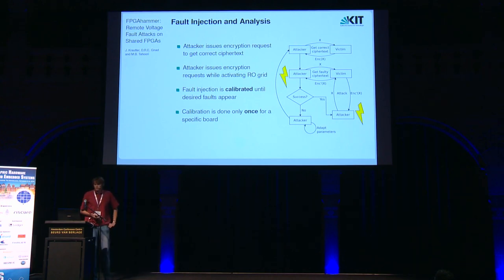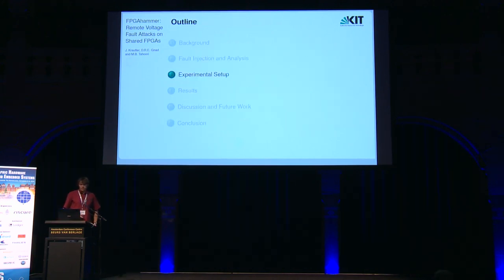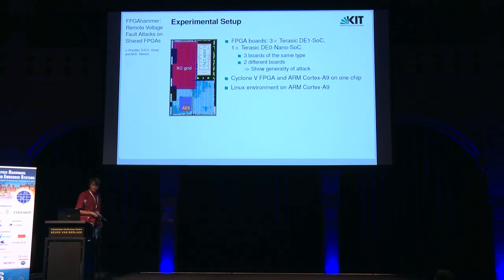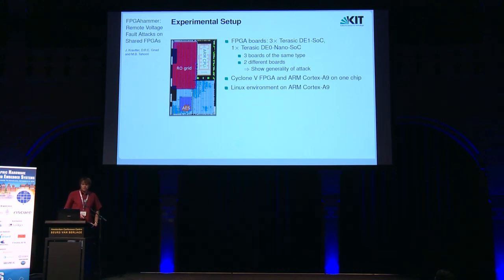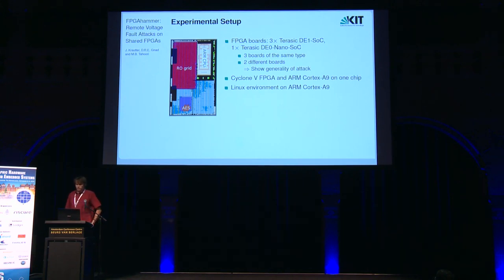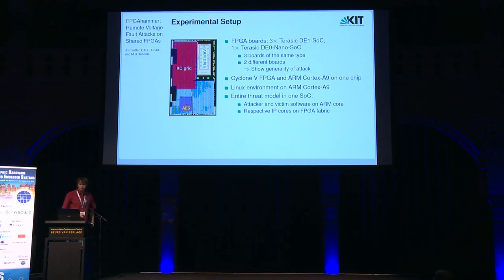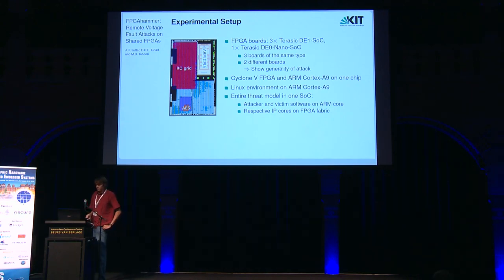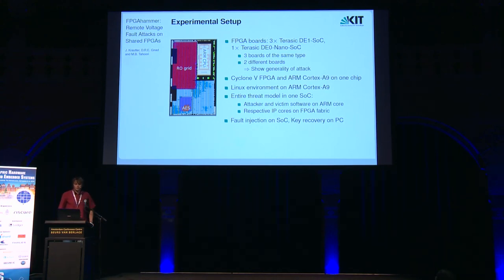This calibration only needs to be done once for a specific board, then we can continuously perform new attacks on the same board. The hardware we used is two boards from Terasic: the DE1 SOC and the DE0 nano SOC. We used three boards of the same type and two different board types in total to show the generality of the attack and how calibration adapts to different boards. All boards are based on the Cyclone 5 FPGA together with an ARM Cortex-A9 on a single chip, with a Linux environment running on the ARM core. This essentially gives us the entire threat model on one SOC — attack and victim run software on the ARM core with respective IP cores on the FPGA fabric. Fault injection was performed on the system-on-chip, and key recovery was done afterwards on a PC.